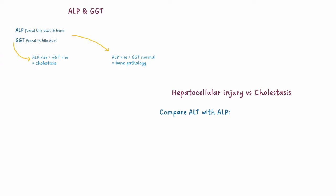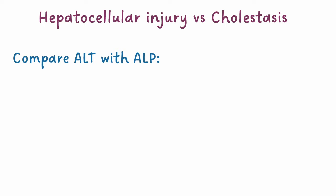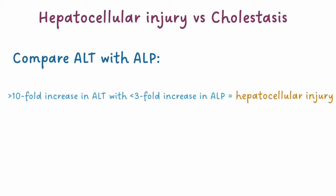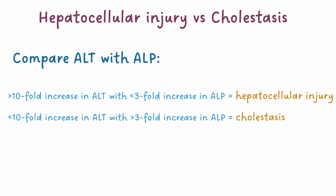To help distinguish whether LFTs are showing hepatocellular injury versus cholestasis, we can compare the rise in ALT with the rise in ALP. If the ALT is 10 times greater than it should be, with ALP being less than 3 times greater, it's probably hepatocellular injury. If ALT is less than 10 times normal value, with the ALP over 3 times greater than its normal value, there's cholestasis. It's also possible to have a mixed picture of liver damage and cholestasis.